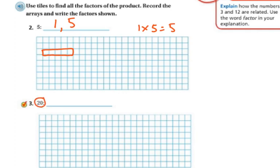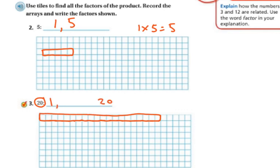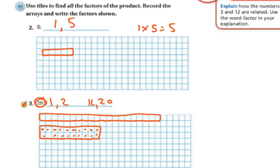Now for 20, I can make a couple of different combinations. Starting with 1: 1 times 20 gives a row of 20 tiles — so factors 1 and 20. Then 2: 2 times 10 gives 2 rows of 10, and 2 times 10 is 20 — so factors 2 and 10. My arrays need to equal 20.